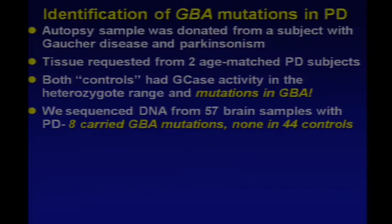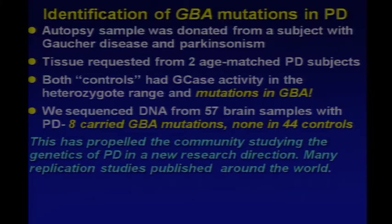This finding was not easy to publish. Everybody had objections — concerns about ethnicity of brain donors, potential Ashkenazi Jewish bias, and insufficient power. I sent the manuscript to about five or six different journals. But eventually the finding became accepted and really propelled the Parkinson genetics community in a new research direction. The finding was particularly notable because large genome-wide association studies being conducted on Parkinson disease had never picked up this gene — so it only came into the radar because of clinical observation.